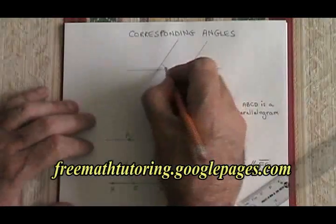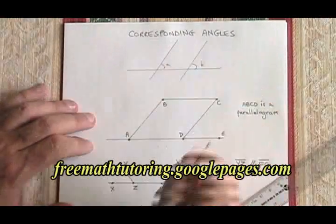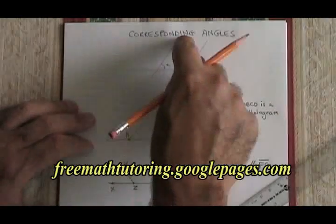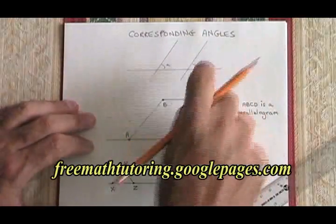What this means is that angle A and angle B must be equal in measure. They are corresponding angles, and you can see visually what corresponding means.